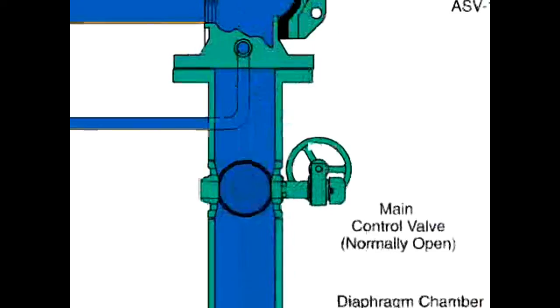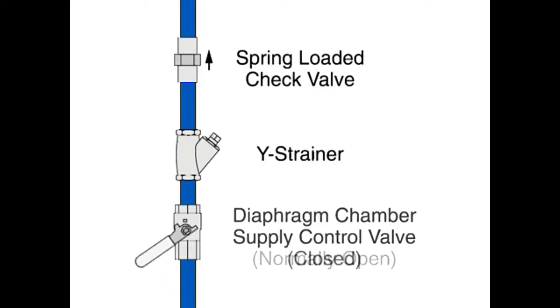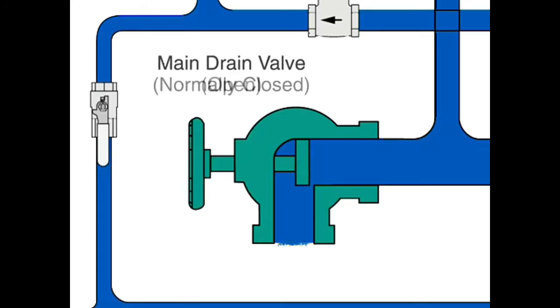To reset the valve after the fire is under control, the main supply valve is manually closed to shut off the water supply, and the diaphragm chamber supply valve is also closed.